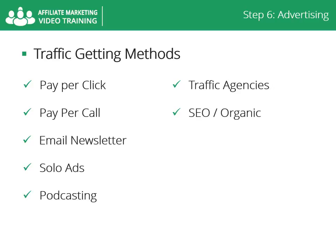SEO. Organic search engine optimization, or SEO, is the process of affecting the visibility of a website or web page in a search engine's natural, unpaid, or organic search results. In general, the earlier or higher ranked on the search results page and more frequently a site appears in the search results list, the more visitors it will receive. SEO may target different kinds of search, including image search, local search, video search, academic search, news search and industry-specific vertical search engines.